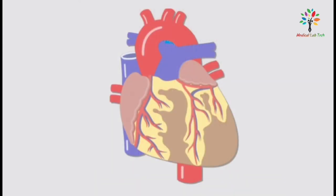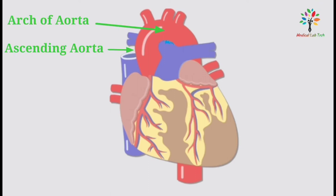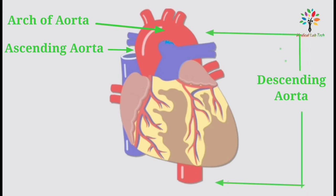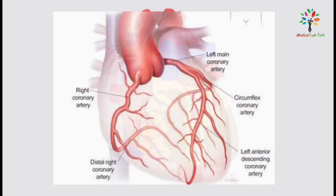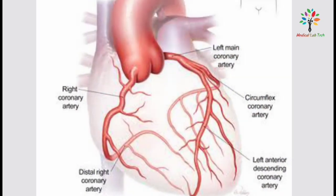Next, I am going to talk about the thoracic aorta. The thoracic aorta has three parts: ascending aorta, arch of aorta, and descending aorta. The ascending aorta is the short section of the aorta that rises from the heart. The right and left coronary arteries are the only branches that arise from the ascending aorta, above the aortic valve.